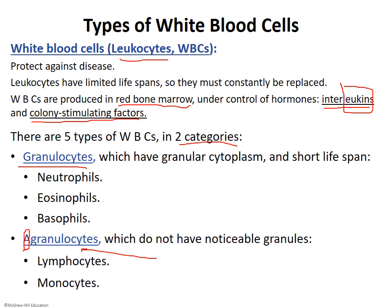The granulocytes include neutrophils, which are the most common — number one of the five — and then eosinophils and basophils, which are the bottom two. The granulocytes are the most common and the two least common. The agranulocytes are right in the middle: lymphocytes and monocytes.